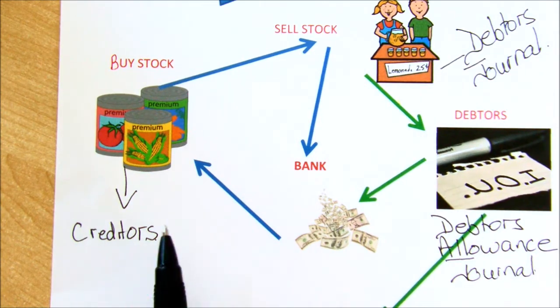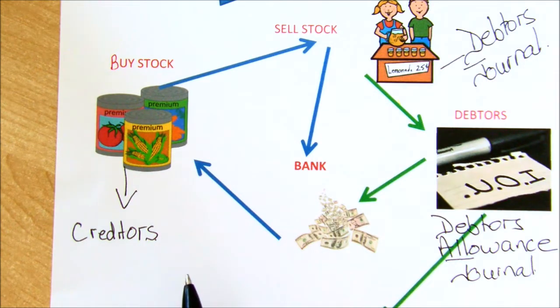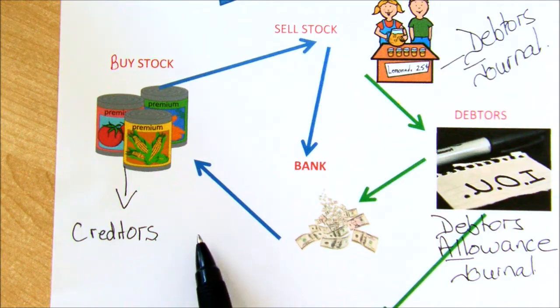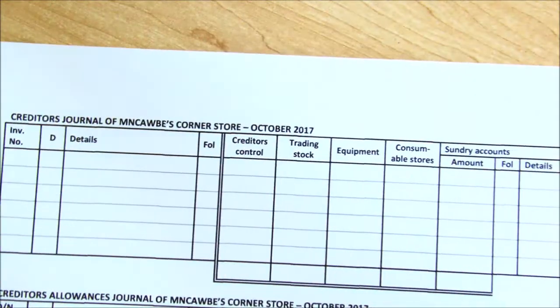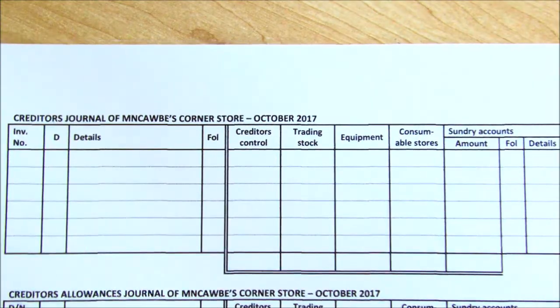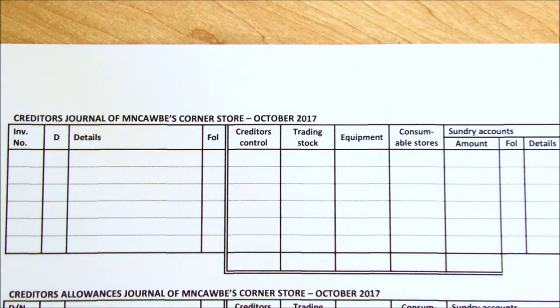We're going to have to bring in a creditors journal to keep record of all the invoices and all the goods we've bought. If there are returns of those goods, since we never paid for them, they won't refund us cash — we'll bring in a creditors allowances journal. The creditors journal looks a lot different from the debtors journal because businesses only generally buy and sell actual trading stock.